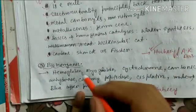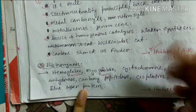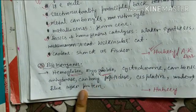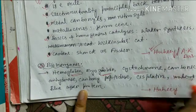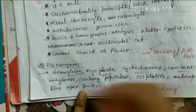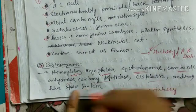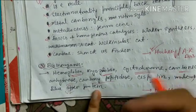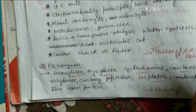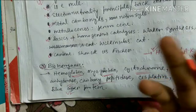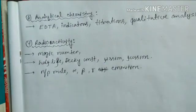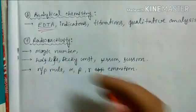Bioinorganic chemistry is a very scoring part. Cover hemoglobin and myoglobin — their properties, oxygen transport, and the Bohr effect. Then cytochrome — its structure — carbonic anhydrase, carboxypeptidase, cisplatin, and blue copper proteins. Also do photosynthesis: the steps and which species are involved in the photosynthetic process. All these can be read from Huheey.